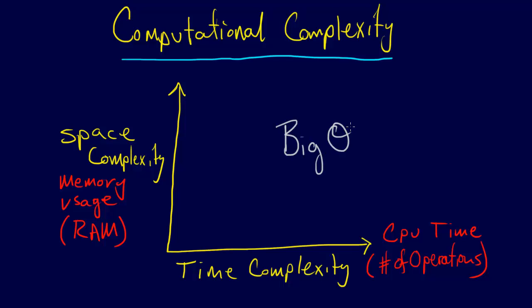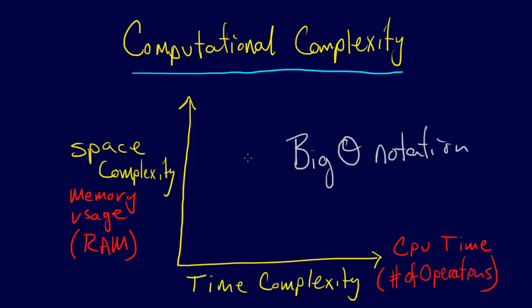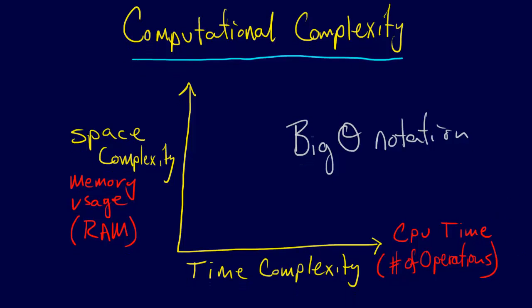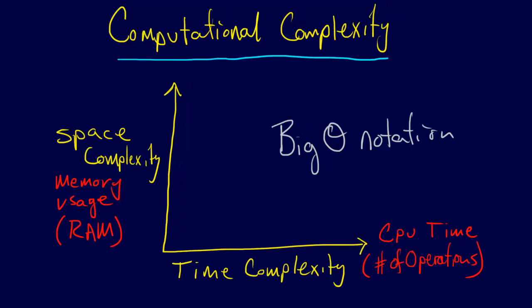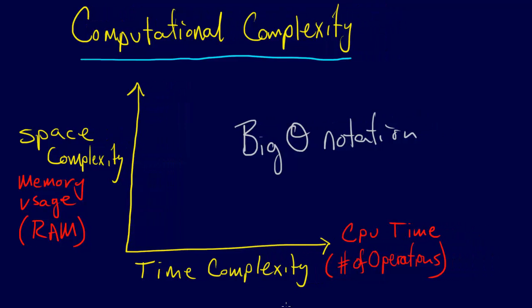Big O notation is used in the textbook. When we evaluate an algorithm, they say this algorithm is order n or order n squared. So this is, for example, order n. What this refers to is analyzing the time complexity — the number of operations — as a function of the input size.